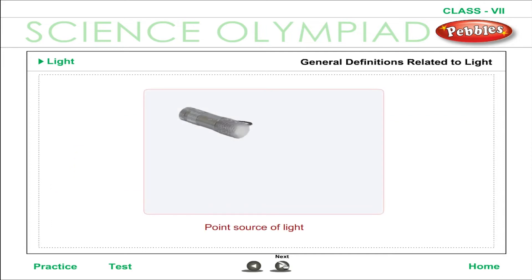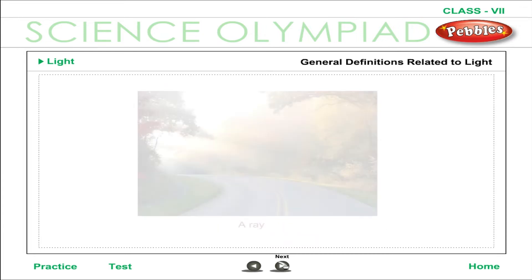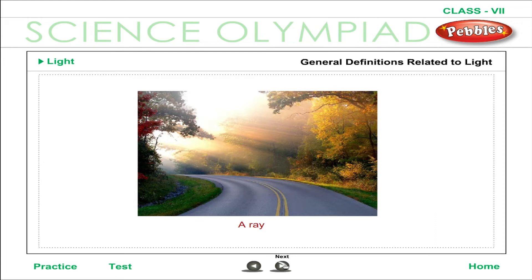Point source of light: if a screen with a pinhole is placed in front of a lighted bulb, a point source of light is obtained. From the point source, light propagates uniformly in all directions. The direction of a very narrow path of light is known as a ray of light. A ray of light is represented by a straight line with an arrowhead indicating the direction of light.